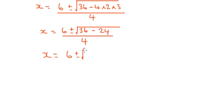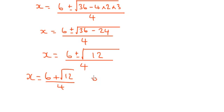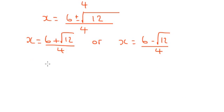6 plus or minus the square root of 12. All divided by 4. So that's either x is 6 plus root 12 divided by 4. Or x is 6 minus root 12 divided by 4. And then we can work out those two numbers on the calculator. So I get 6 plus root 12 divided by 4 is 2.37. Or x equals 6 minus root 12 divided by 4.